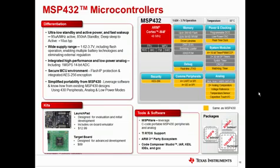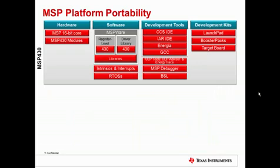Taking a closer look at the device, you'll see here in orange the peripherals that are the same as in MSP430. This is important for MSP users who want to migrate their code from their 16-bit device to the new 32-bit core. The items shown here are typical components of an MSP430 user: hardware, software, development tools, and development kits.